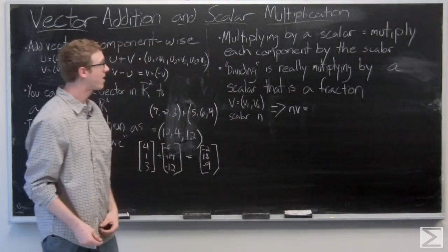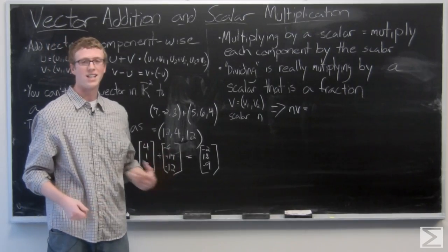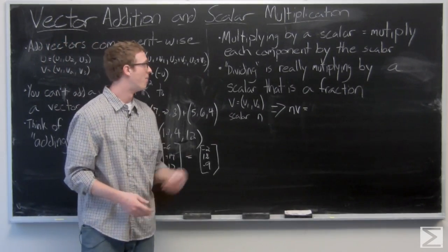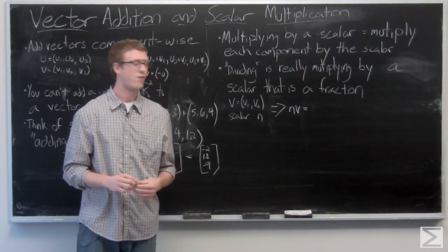Now multiplying by a scalar, very similar to vector addition. You need to multiply each component of the vector by a scalar. And dividing a vector by a scalar is really just multiplying by a scalar that's a fraction.